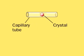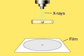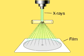The protein crystal is mounted in a specific orientation and exposed to a beam of X-rays. The atoms in the crystal scatter the X-rays, which are recorded on film.